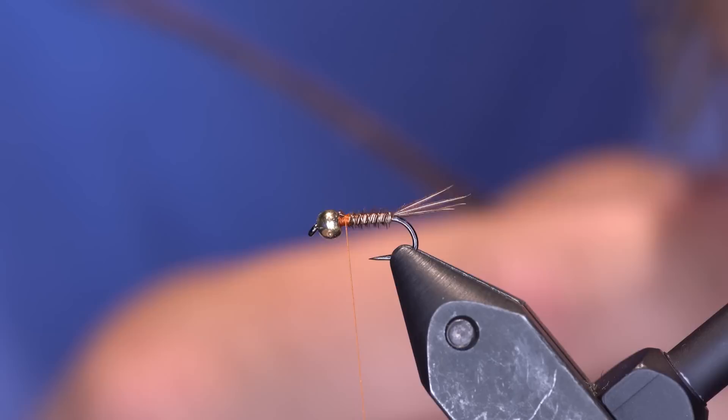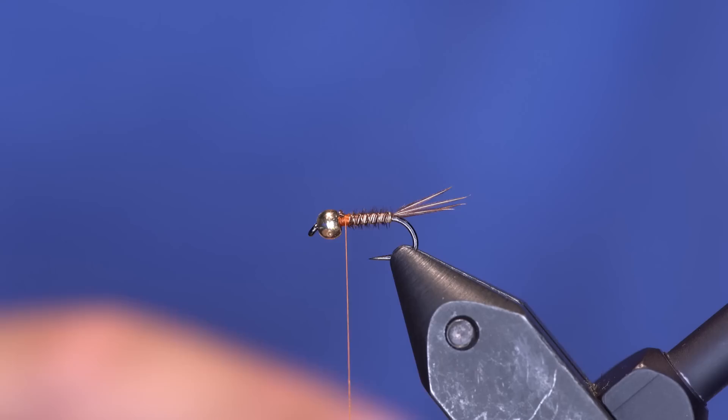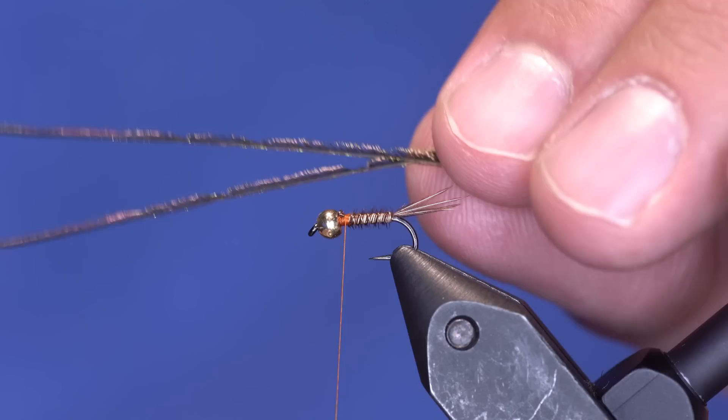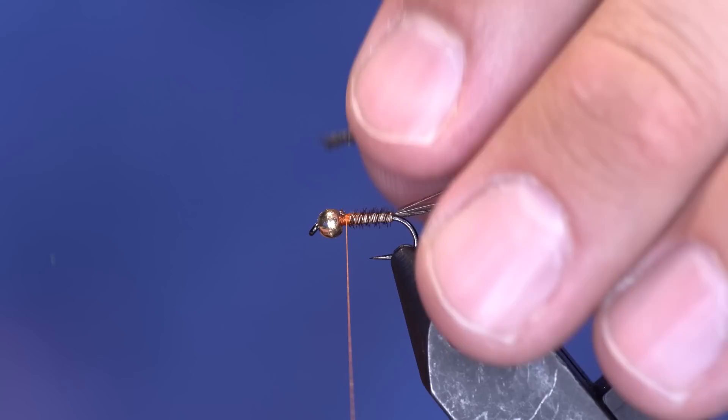All right, I'm gonna use some peacock from the eye on this one, just like two strands of peacock. And I'm gonna - you can see the tips kind of have these little parts where there's no fiber - so I'm gonna come in here and just trim those off and tie those in about the part where I trimmed them off.